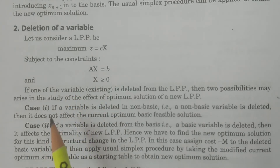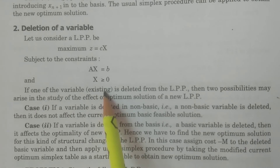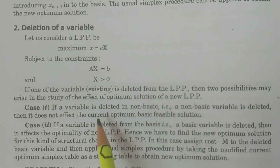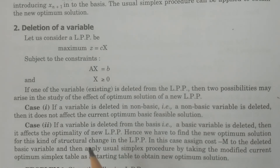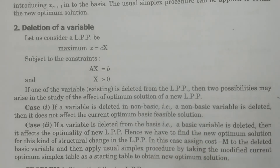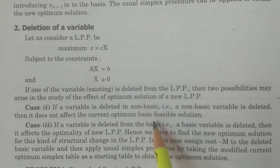You can see the difference between addition of a new variable and deletion of a variable. In deletion, an already existing variable is going to be deleted. If an existing variable is deleted from the linear programming problem, there may be two possibilities — Case 1 and Case 2. Case 1: if the variable to be deleted is non-basic, that is, it belongs to the non-basic variables and not to the basis, then it does not affect the current optimum basic feasible solution. There is no change in the optimum solution.